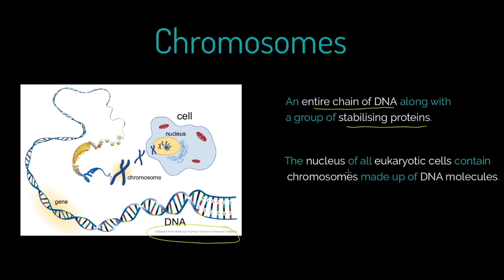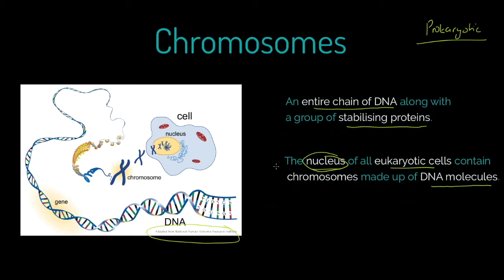The second definition I'd encourage you to consider and also to learn is that the nucleus of all eukaryotic cells — animals and plants are great examples — contain chromosomes made of DNA molecules. Of course, if we were talking about prokaryotic cells, things like bacteria, they wouldn't be bound in the nucleus. That's why we're talking about eukaryotic cells here.